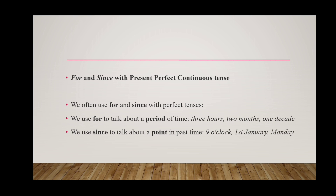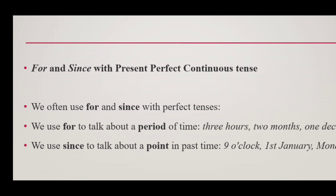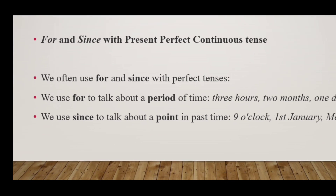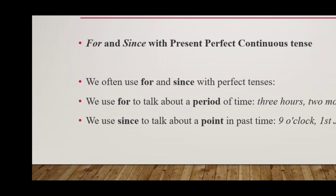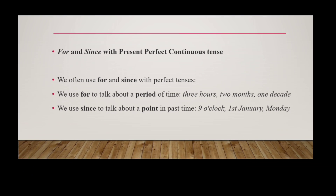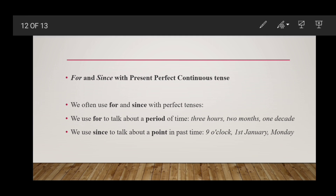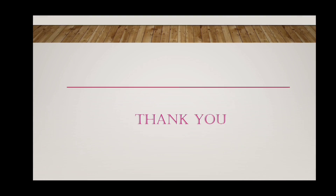With the perfect tenses, very often we use 'for' and 'since' to show the time period. We use 'for' about a period of time — for example, three hours, two months, one decade. And we use 'since' to talk about a point of time, like 9 o'clock, 1st January, Monday, etc. So this was about the present tense and its types. Hope this video will help you understand about present tense. Thank you.